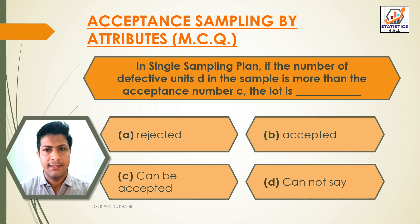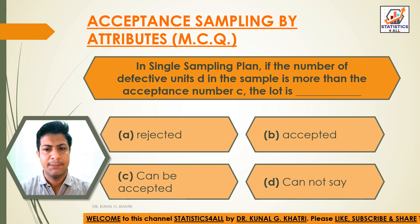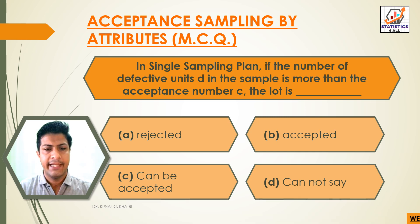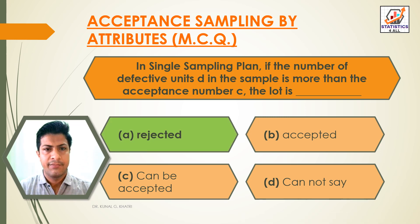Question 15: In a single sampling plan, if the number of defective units D in the sample is more than the acceptance number C, the lot is — The answer is Option A — Rejected. If D is greater than C, the lot is rejected.